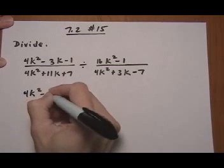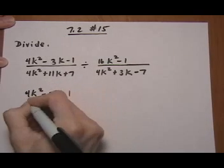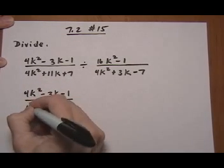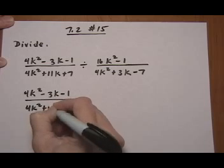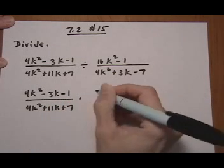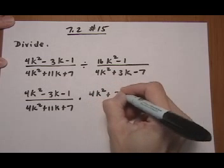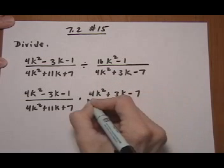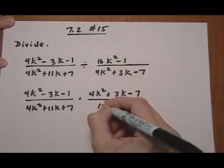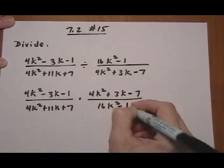4k squared minus 3k minus 1 over 4k squared plus 11k plus 7, times, and flip the second one over. 4k squared plus 3k minus 7, all over 16k squared minus 1.